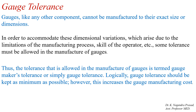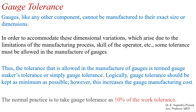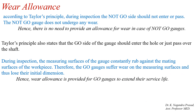Logically, gauge tolerance should be kept as minimum as possible; however, this increases the gauge manufacturing cost. In general, the gauge tolerance value is considered as 10% of the work tolerance. Next we have to see the wear allowance according to Taylor's principle.